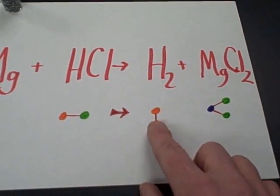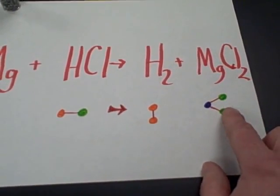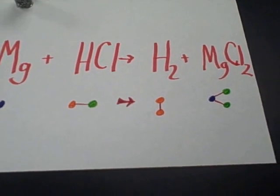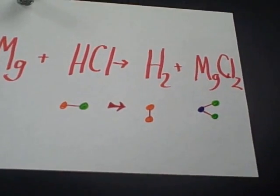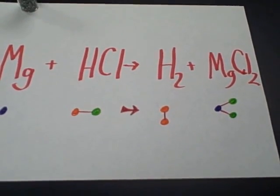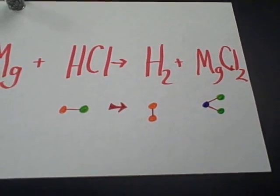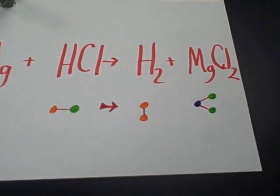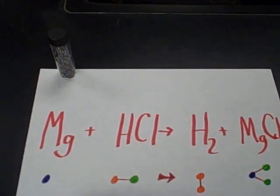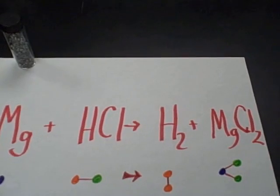On the other side of the equation, we have two magnesiums and two chlorines. Now during a chemical reaction, you cannot create matter — things cannot just pop out of nowhere. So what we have to do is balance the chemical equation.